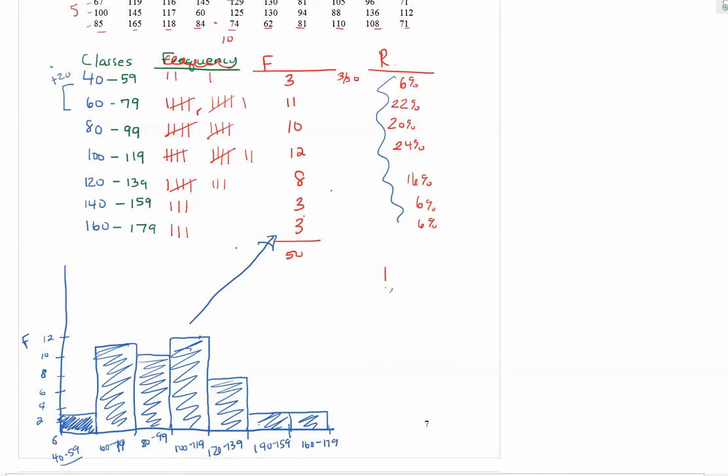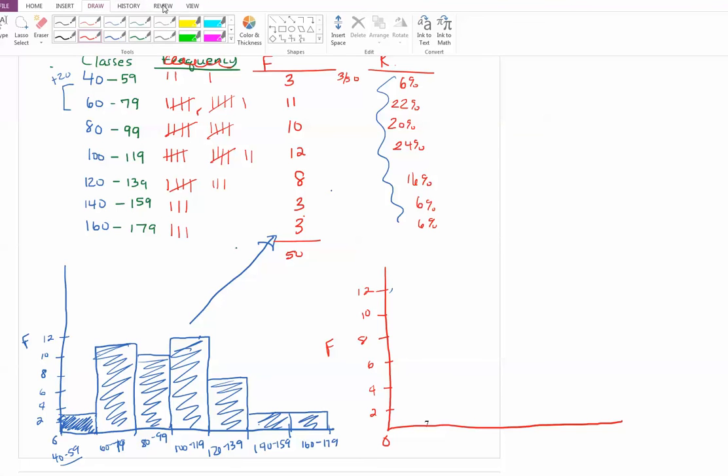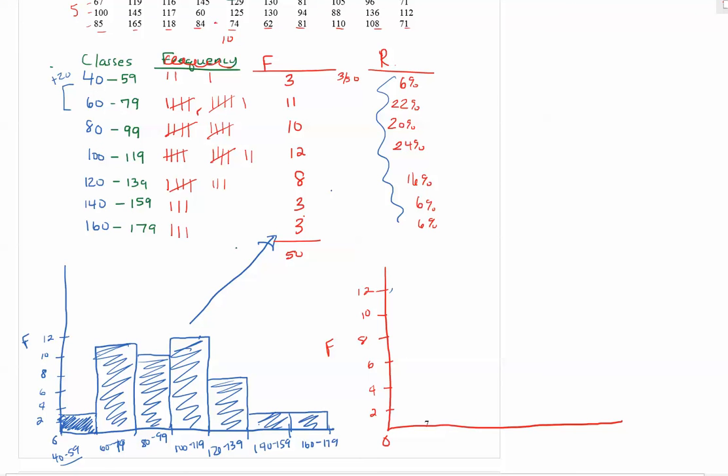So for a frequency polygon we're going to start the graph. And again I want to pick the y-axis to be my frequencies. So I'm going to just use the same scale again going up by twos. And now we want to calculate the midpoints of each class. So to calculate a midpoint you take the lower number plus the upper number and you divide it by 2. So for the first class I have 40 plus 59 equals 99 divided by 2 is 49.5. So I have a midpoint of 49.5 for my first class.